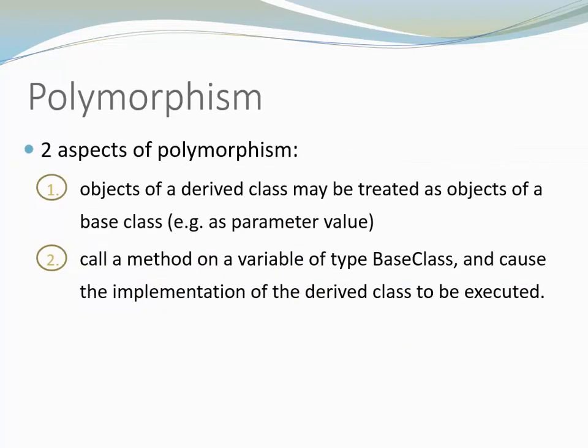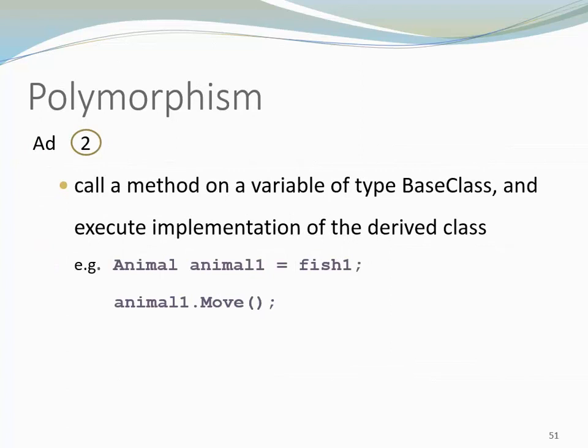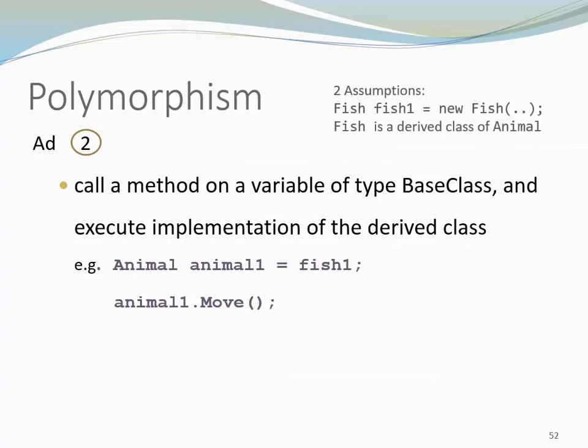So far we looked at the first case where an object of a derived class is treated as an object of the base class. Now let's look at the second case, where we call a method on a variable of type base class and the implementation of the derived class is executed. We have two assumptions: Fish1 is an instance of Fish, and Fish is a derived class of Animal. If the method move was only declared in class Animal, that implementation would be executed. However, if the method move was overridden in class Fish, the Fish version would be executed.